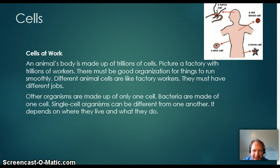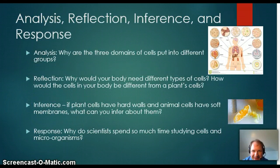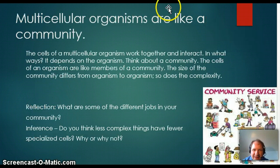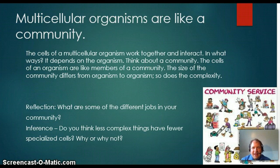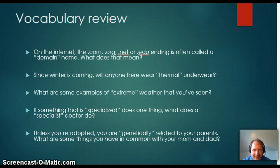The cells are very specialized — they do one thing. In your body, your cells do lots of different jobs all the time. We'll discuss in the live class why your body needs different types of cells and how they're like a community. Everything has to work together; everything has to do its role. Some things are more complicated, some less complicated, but something is always there.